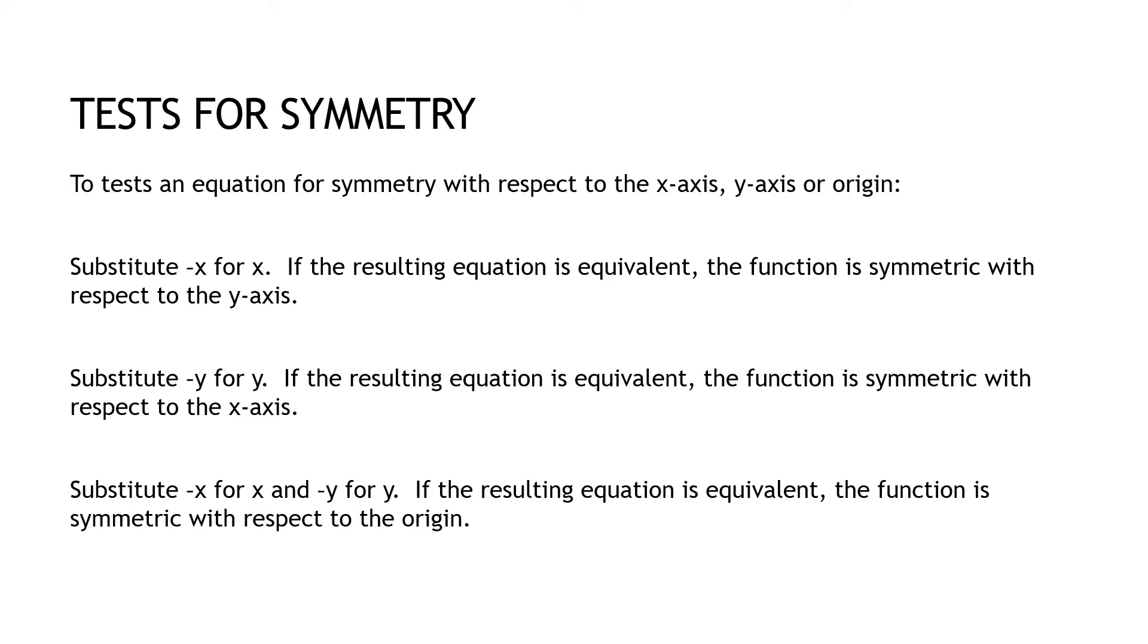Mathematically, of course, we might have to do a little bit of work. So mathematically, if I put in a negative x for x and get the exact same function, it's symmetric to the y-axis. If I do that for y, replace negative y with positive y, and it's the same function, then it's symmetric to x. If I do it for both, and it's still the same function, it's symmetric with respect to the origin.